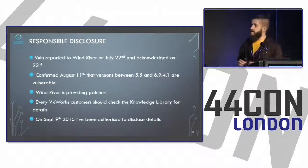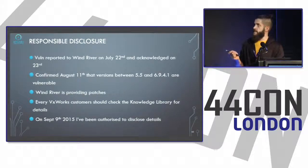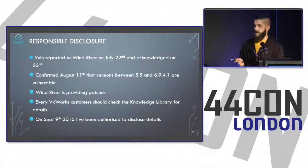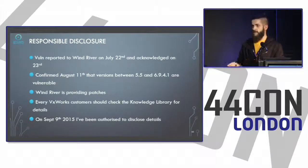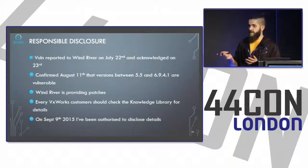We reported this vulnerability to Wind River on July 22nd, and they acknowledged it on the 23rd and confirmed the vulnerability on August 11th. This vulnerability affects VxWorks versions 5.5 through 6.9.4.1. They announced yesterday that patches are being provided, but they will not make a public announcement or create a CVE, claiming it doesn't have a big impact — and we will see that they are wrong.